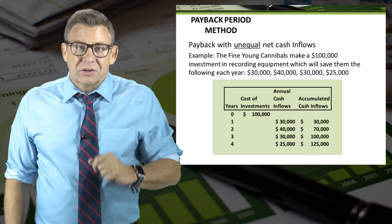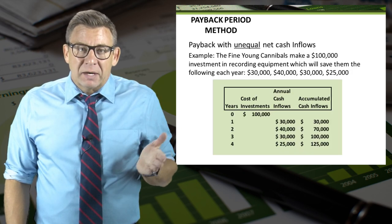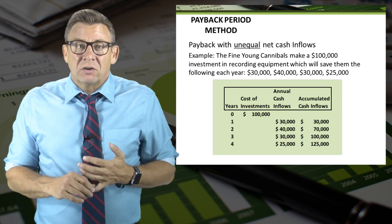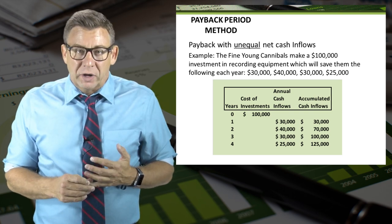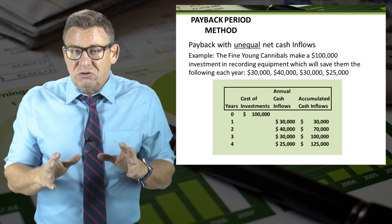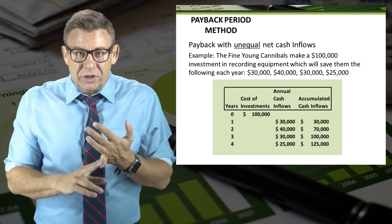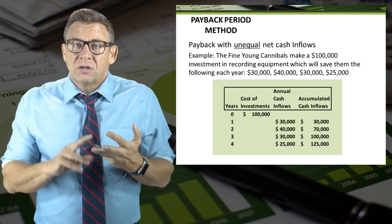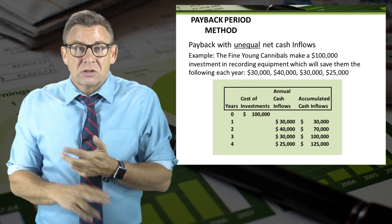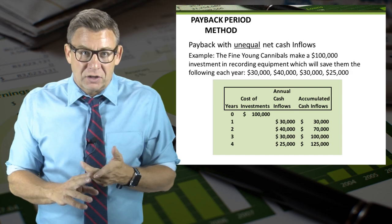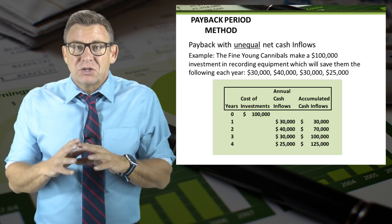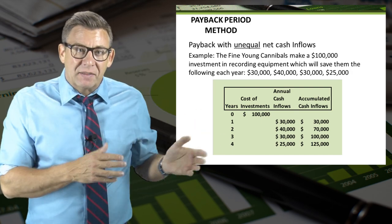Let's look at the example. The Fine Young Cannibals make a $100,000 investment in recording equipment, which will save them the following each year: $30,000, $40,000, $30,000, and $25,000. The way to determine payback is to make a table like this.